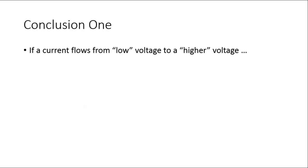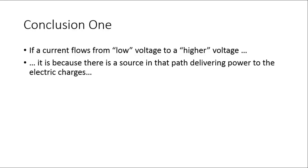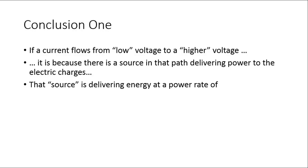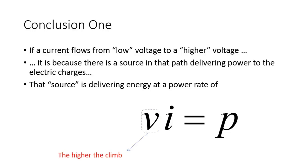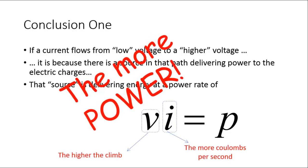Conclusion 1: If a current flows from a lower voltage to a higher voltage, it is because there is a source of energy in the path that is delivering power to the electric charges. That source is delivering energy at a power rate of VIP. The higher the climb, the more coulombs per second, the more power.